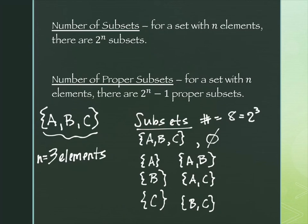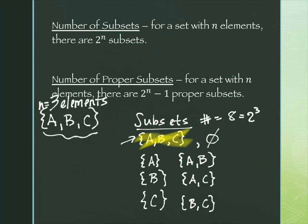For proper subsets, we remove the whole set itself — because a proper subset must be strictly smaller than the set. That gives us one fewer: seven proper subsets. So 2^n gives total subsets, and 2^n minus 1 gives proper subsets. The sticking point in homework is knowing how many there are and the relationship between the two.